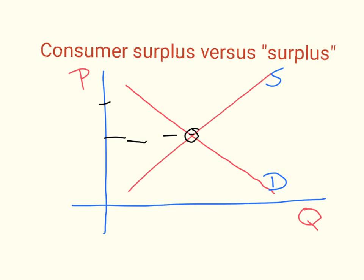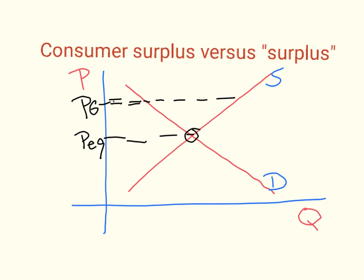Regular surplus is different. When you have the equilibrium free market price and the government sets by law a price that is higher — for example a price floor like minimum wage — the government-set price is above the equilibrium price (P_eq), and this creates what we call a surplus. So that's different from consumer surplus — the terms sound the same but it's a different concept. There is a clear difference between consumer surplus or producer surplus and surplus by itself.